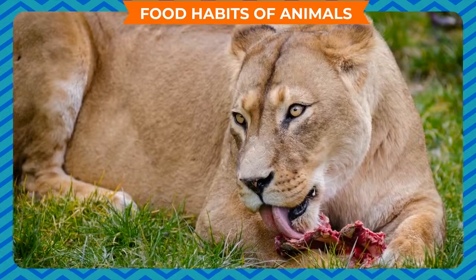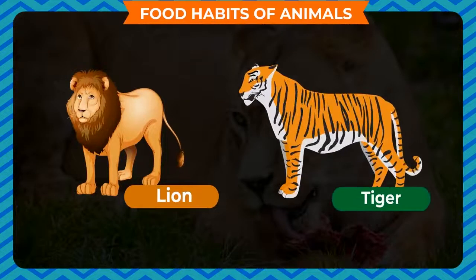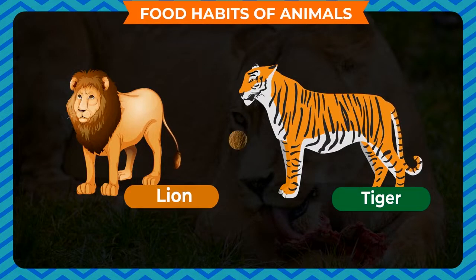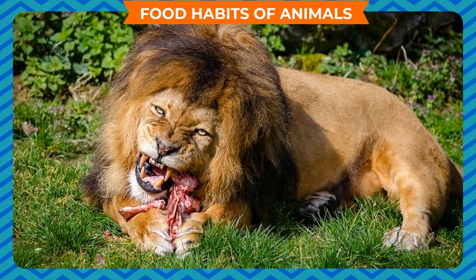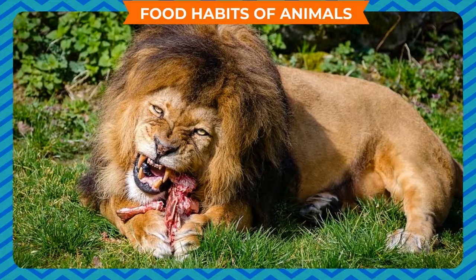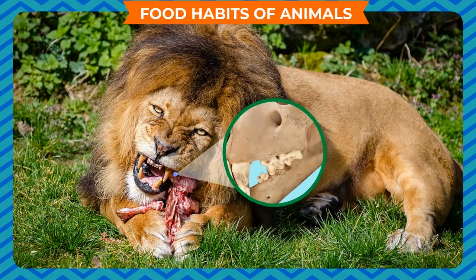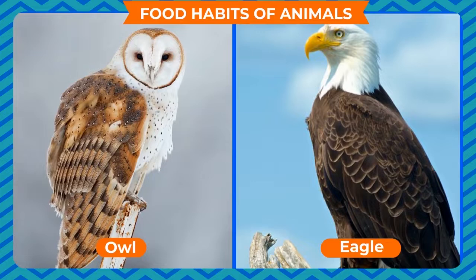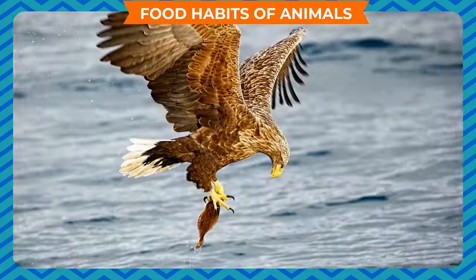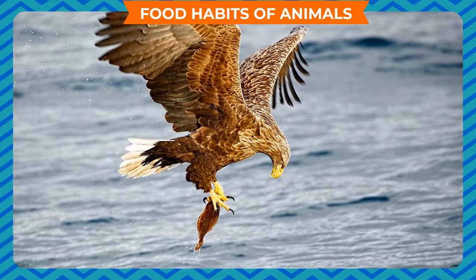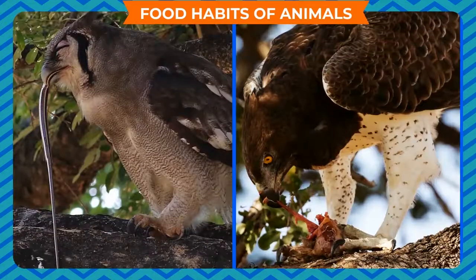Some animals such as lion and tiger eat the flesh of other animals — they are called carnivores. Carnivores have sharp and pointed front teeth to tear the flesh of animals and strong back teeth for chewing it. Birds of prey such as owl and eagle have strong sharp claws to catch their food and tear the flesh with their hooked beaks.